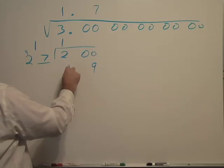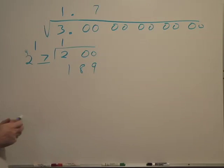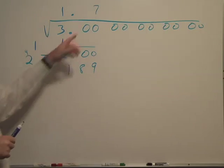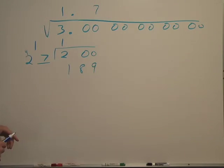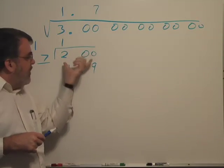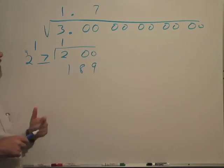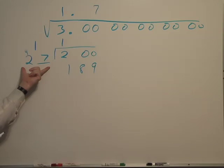You can see if I put an 8, 8 times 28 is well over 200, and 6 would be too small. So the largest, the closest I can get to 200 is putting a 7 up here, putting the 7 there, and multiplying.